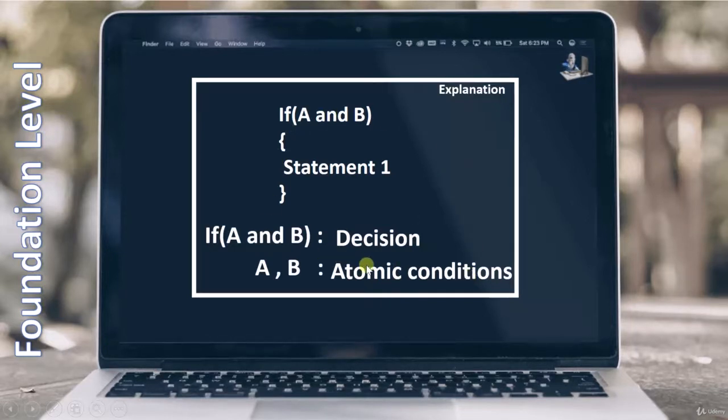Now since we are talking about decision testing, A and B are of no use to us. We have to focus on if A and B. This whole is a decision. For this as a whole, we have to complete true and false. One time this complete decision has to become true, and next time this has to become false. We are not caring about what is the value of A and B. What we care about is the whole decision has to become true and false.